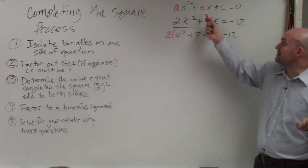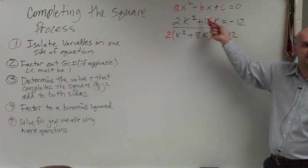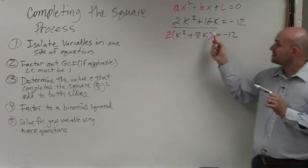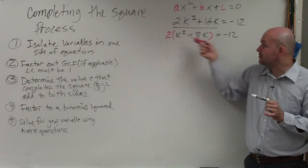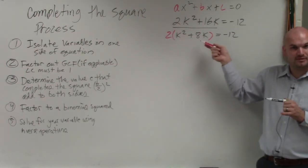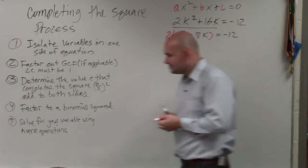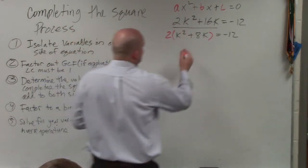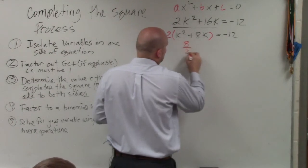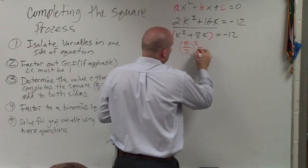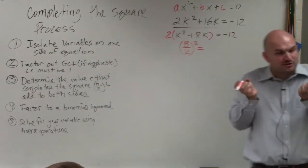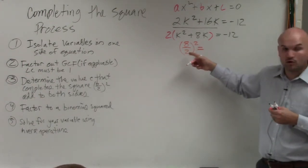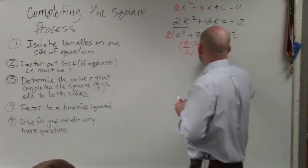So basically, I want you guys to understand that B is the coefficient of your linear variable. So B in this case, once I factor out my 2, my B is what? 8. So what we're going to do is I'm going to do 8 divided by 2 and squared. That is going to give me the value that is going to complete the square. 8 divided by 2 is 4. 4 squared is 16.